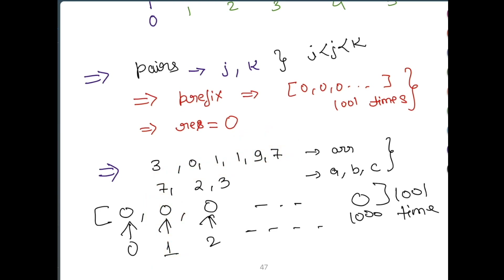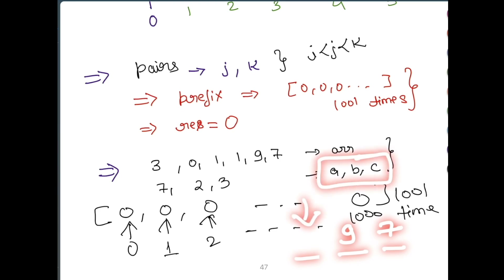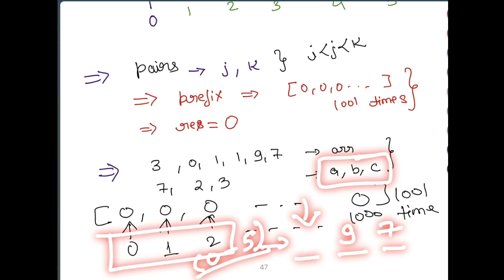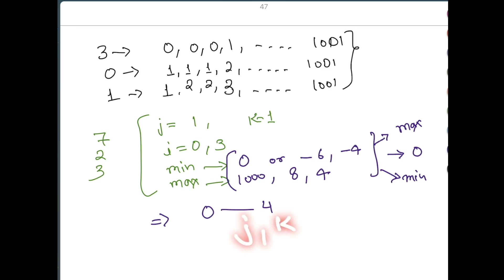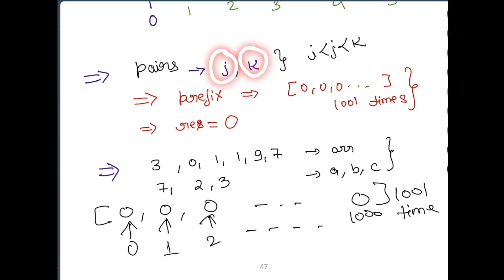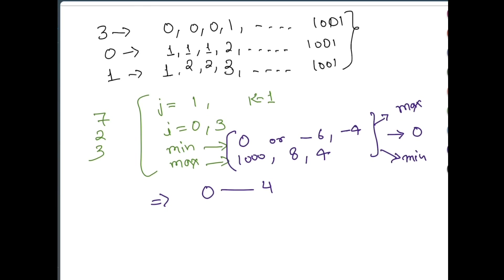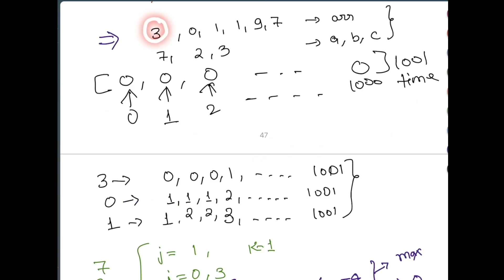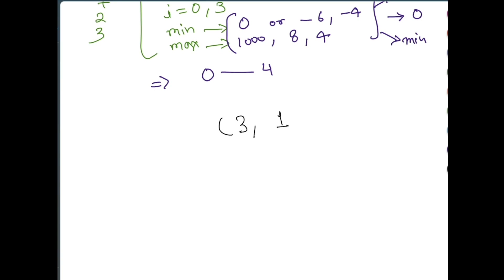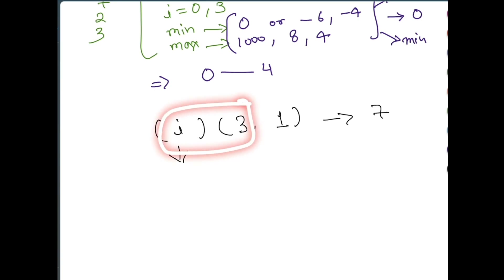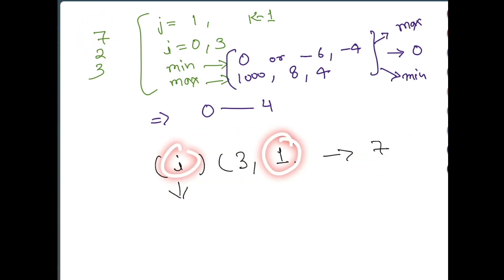For example, suppose we are creating the pair where j has value 9 and k has value 7, and we need to find valid values for i. Given conditions a, b, c, we need to find the minimum and maximum possible value for i. The minimum value of i is the maximum of: 0 (minimum allowed), j minus a (= 9 - 7 = 2), and k minus c (= 7 - 3 = 4). We take the maximum so that all conditions are satisfied simultaneously. The maximum value of i is the minimum of: 1000 (maximum allowed), j plus a, and k plus c. This gives us a valid range for i.